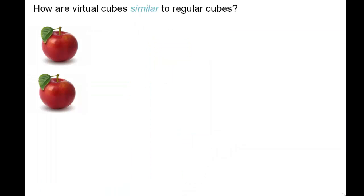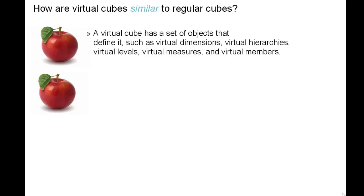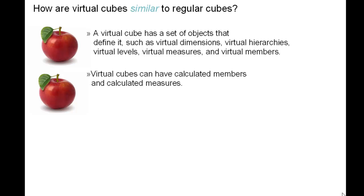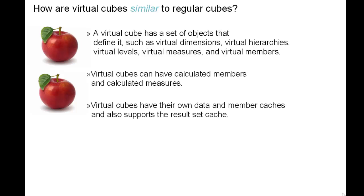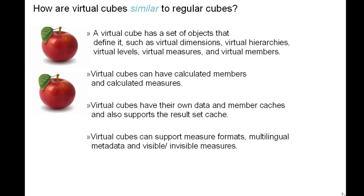How are virtual cubes similar to regular cubes? Like a regular cube, a virtual cube has a set of objects that define it, such as virtual dimensions, virtual hierarchies, virtual levels, virtual measures, and virtual members. Virtual cubes can have calculated members and calculated measures. Virtual cubes have their own data and member caches, like regular cubes, and also support the results cache. Virtual cubes can support measure formats, multilingual metadata, and visible and invisible measures.